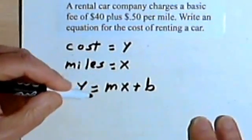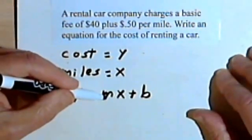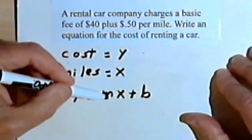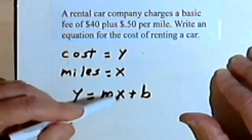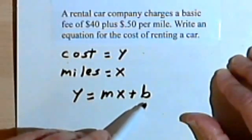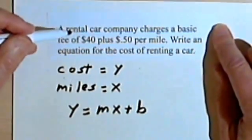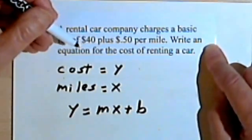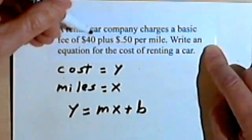Remember, mx plus b means that m is the slope, how much something is increasing or decreasing, and b is going to be the y-intercept. So let's look at the word problem and try to figure out where the slope is and where the y-intercept is.